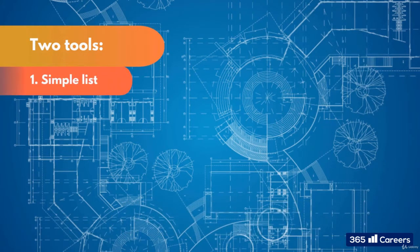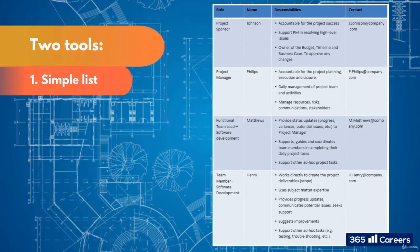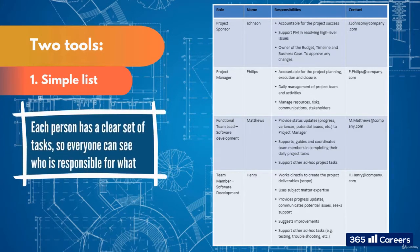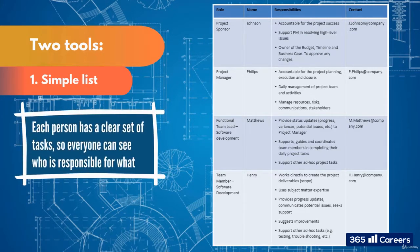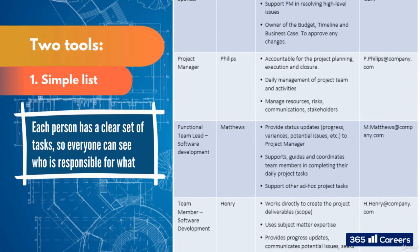The first one is a simple list like this one. Easy enough, right? Each person has a clear set of tasks, so everyone can see who is responsible for what.